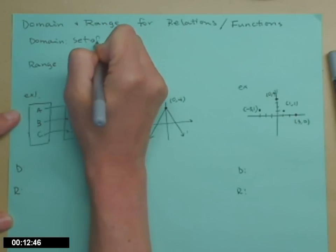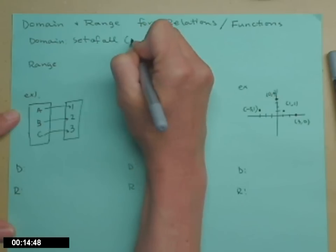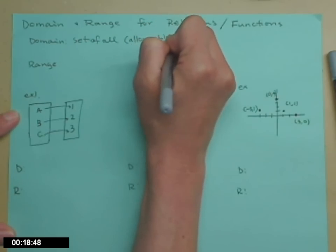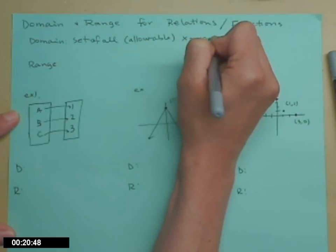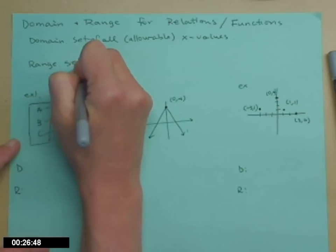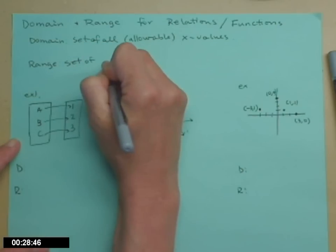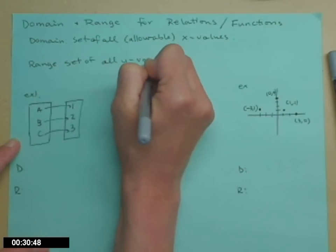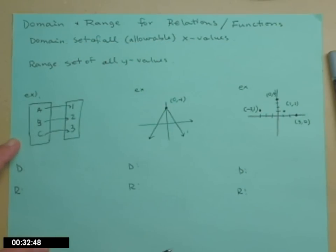Domain is the set of all allowable x values. Sometimes we'll need to make a call on what's allowable. The range is the set of all y values.